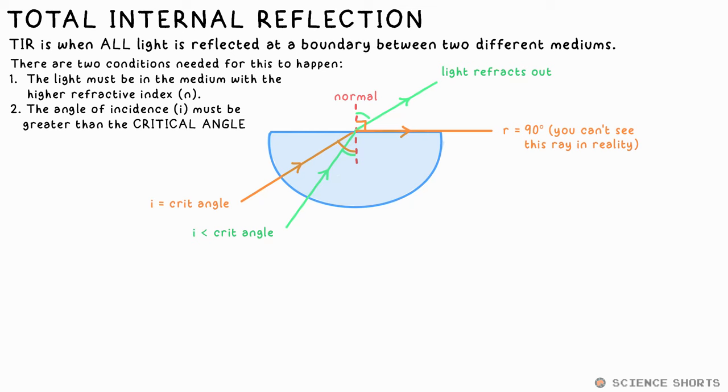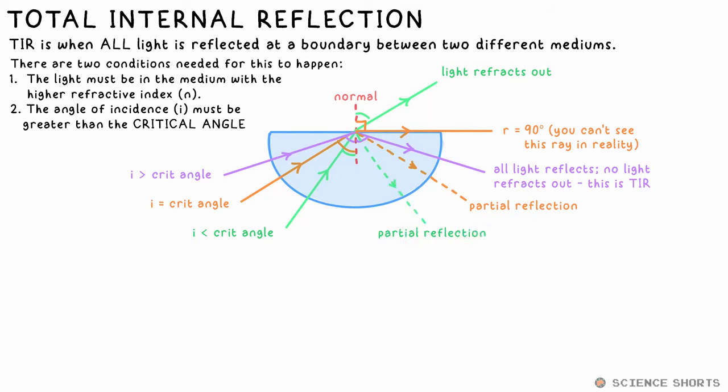If we make the angle of incidence even bigger than the critical angle, that means that no light is going to be refracted out of the block. Instead, all light is reflected back inside. By the way, we always get some reflection, but now we have total internal reflection.